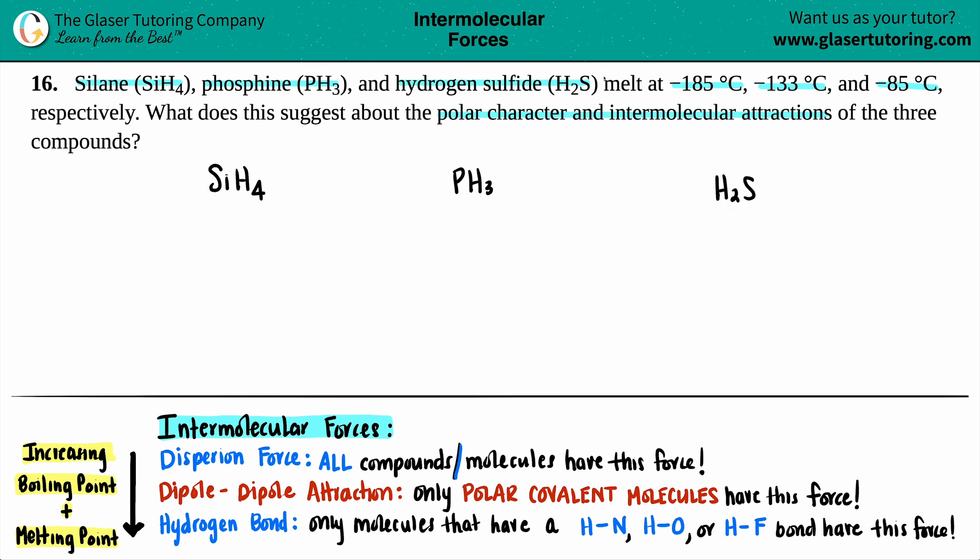They told us the melting points respectively. SiH4 has a melting point of negative 185 degrees Celsius, then we come up to negative 133 degrees Celsius, and we have negative 85 degrees Celsius. We have to suggest what's going on with the polar character and intermolecular interactions in these compounds.